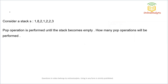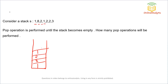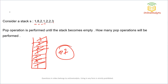Next question: consider a stack with elements 1, 8, 2, 1, 1, 8, 2, 1, 2, 2, 3 — wait, counting from the given stack: there are 7 elements. Pop operations are performed until the stack becomes empty. Since there are 7 elements, you need 7 pop operations. So 7 is the correct answer. These were some of the questions asked in the Infosys exam; similar types of questions appear.